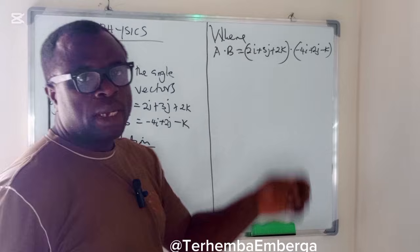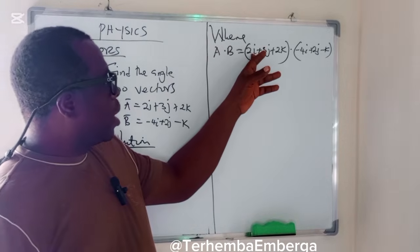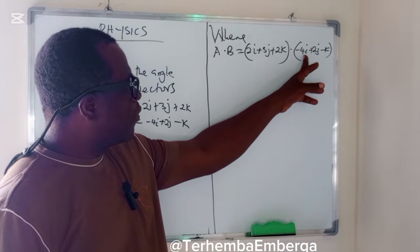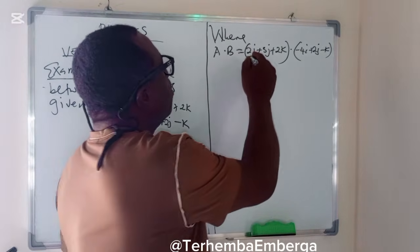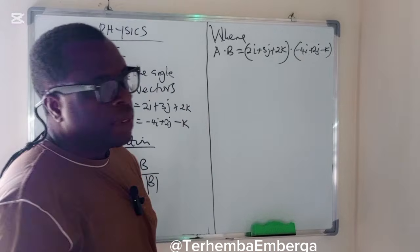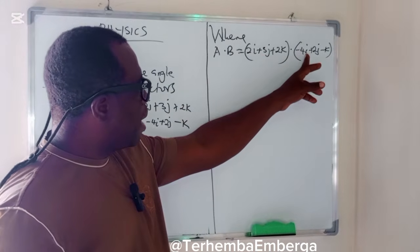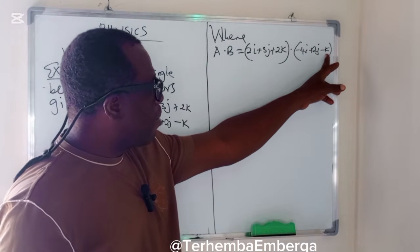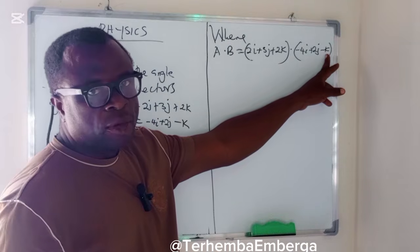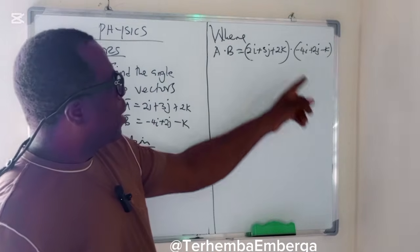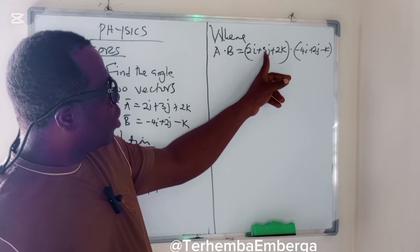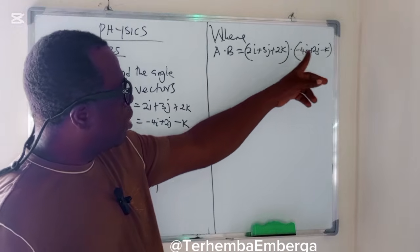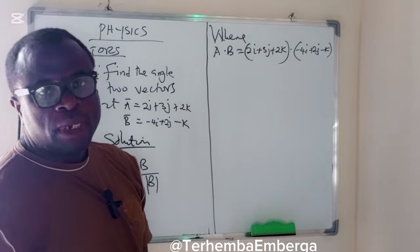Normally, if you have a situation like this, in trying to open the brackets, you take the first term and multiply by all the terms here. 2I multiplied by minus 4I, 2I multiplied by 2J, 2I multiplied by minus K. If you finish, you move to 3J multiplied by this, 3J multiplied by this, 3J multiplied by this. But we don't need to do that.